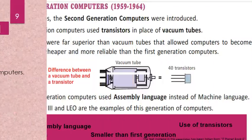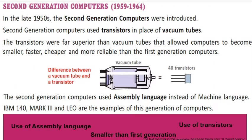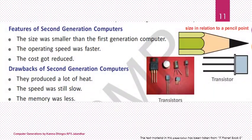Now, the second generation computers. In the late 1950s, the second generation computers were introduced. They make use of transistors in place of vacuum tubes. A transistor is a semiconductor device used to amplify or switch electronic signals and electrical power. Second generation computers use assembly language — a low-level language like machine language but including symbols, which is why it is also called symbolic language. They were smaller, faster, cheaper, and more reliable than first generation computers.